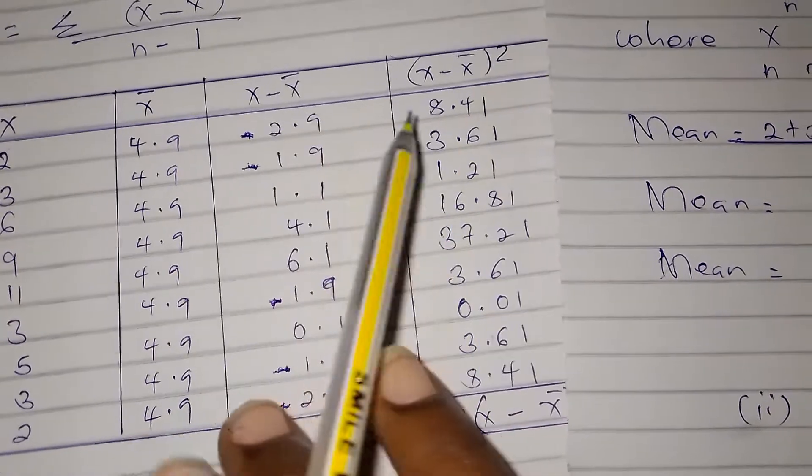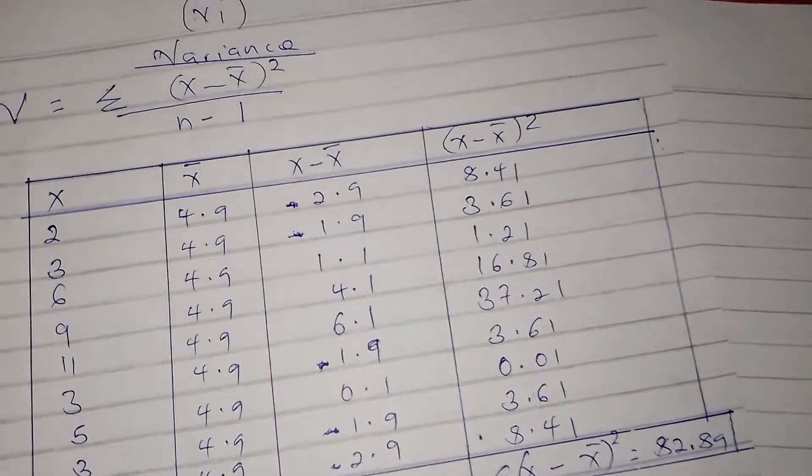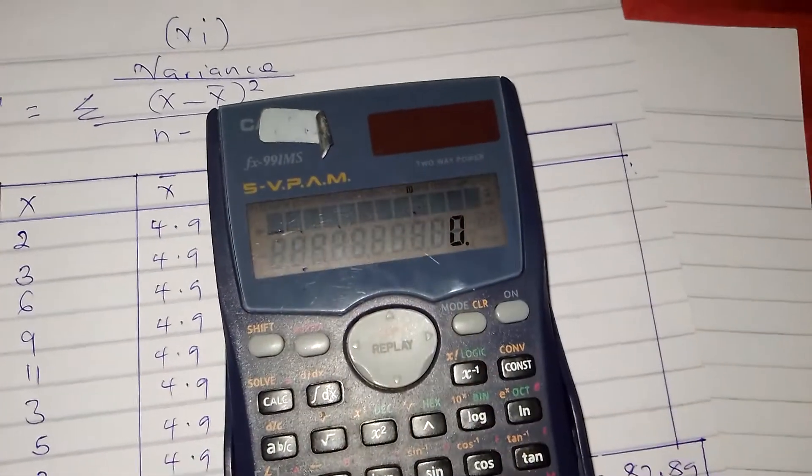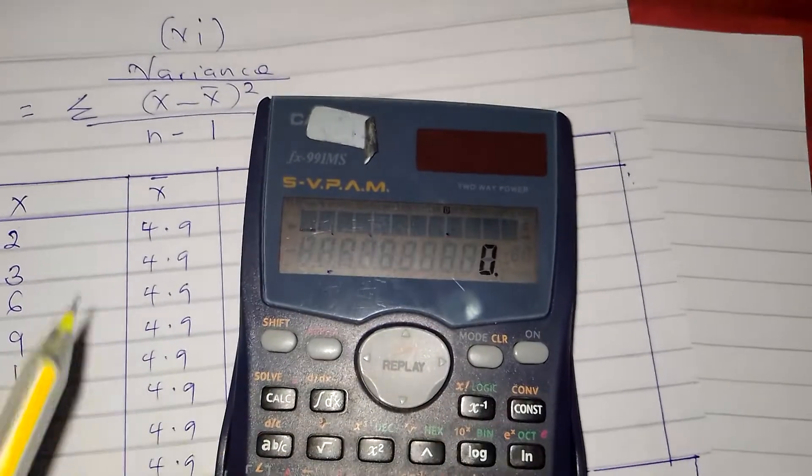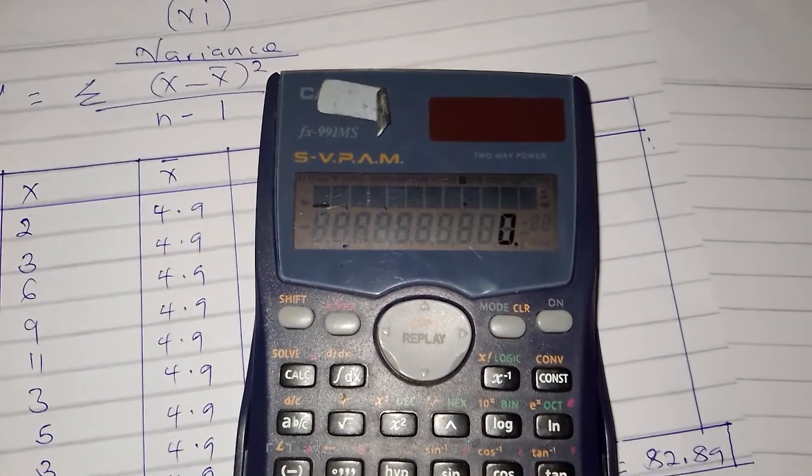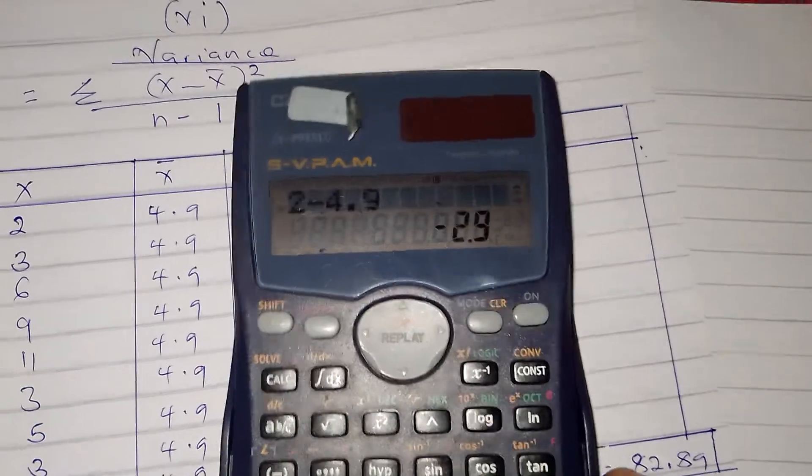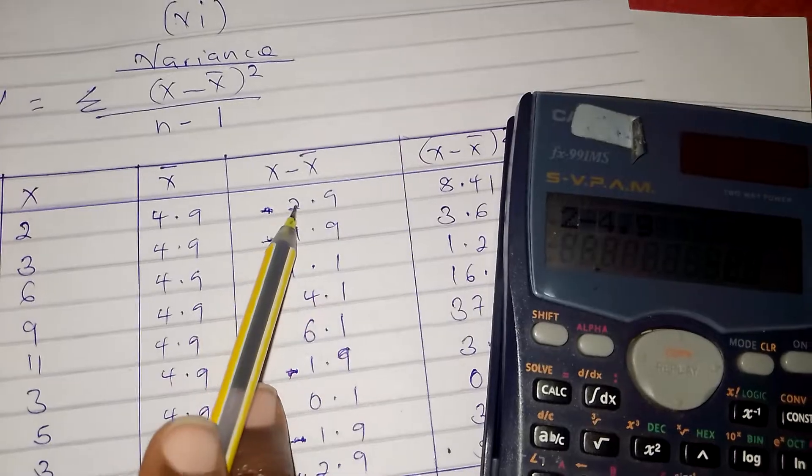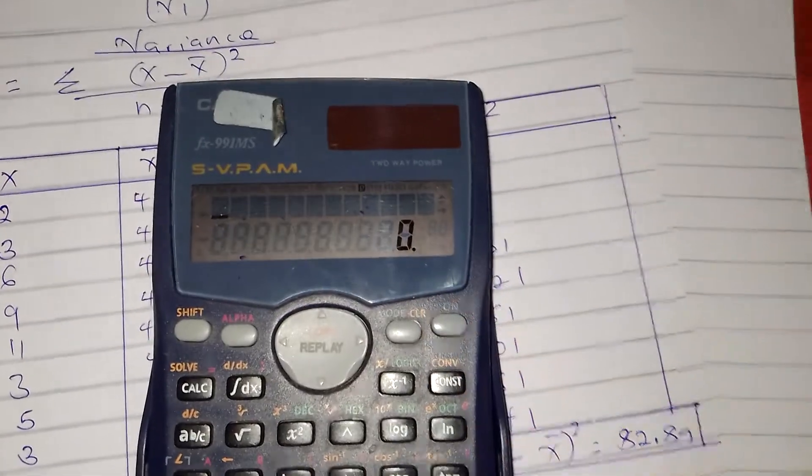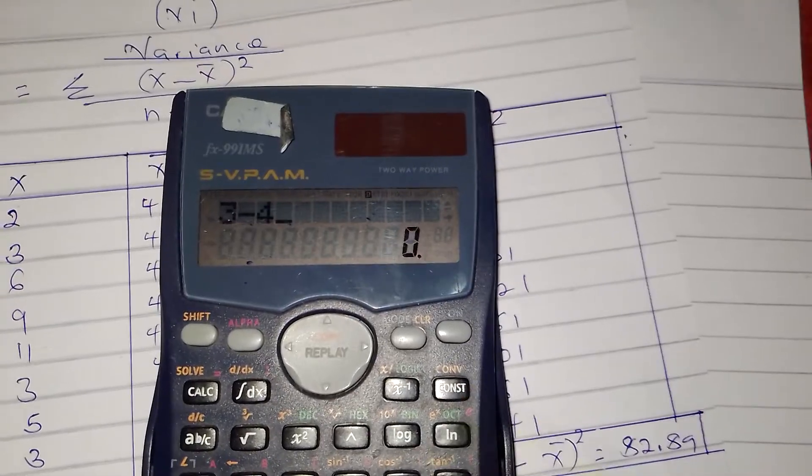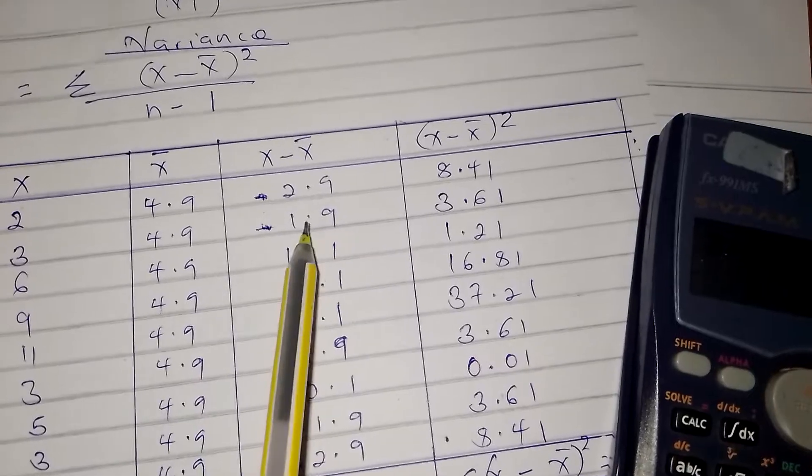The next column we need is (x - x̄). What we do is x minus x̄, which is 2 - 4.9 = -2.9. We ignore the negative and only take 2.9. Then 3 - 4.9 = -1.9, we ignore the negative and only take 1.9.